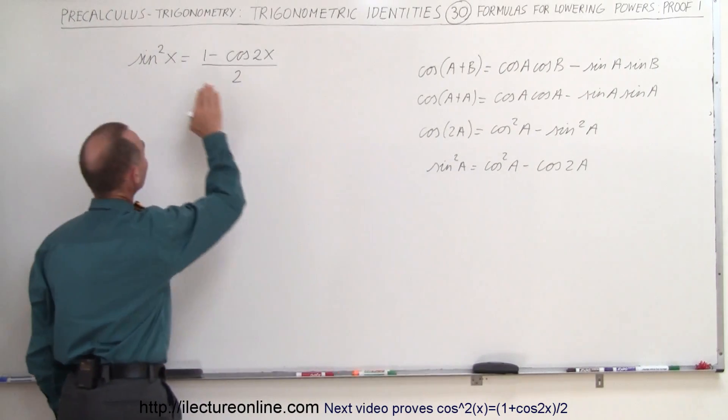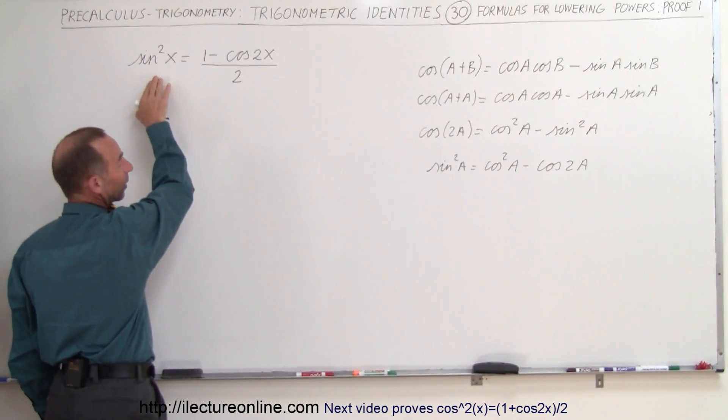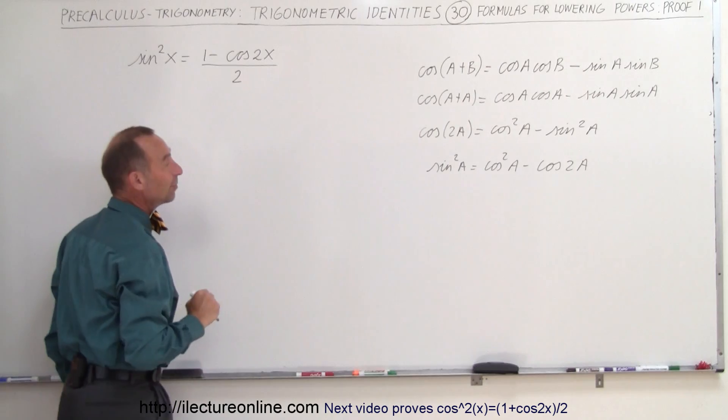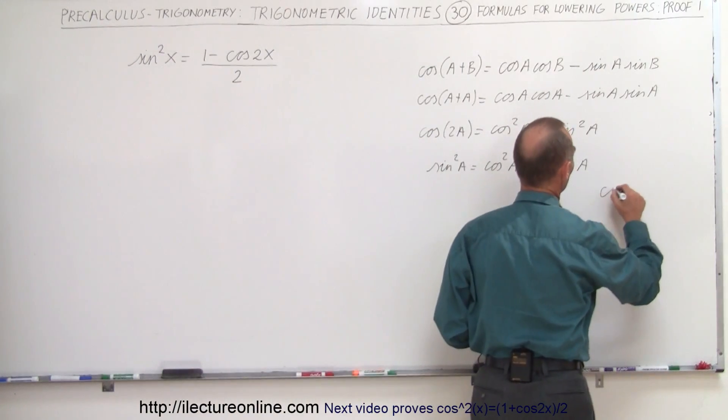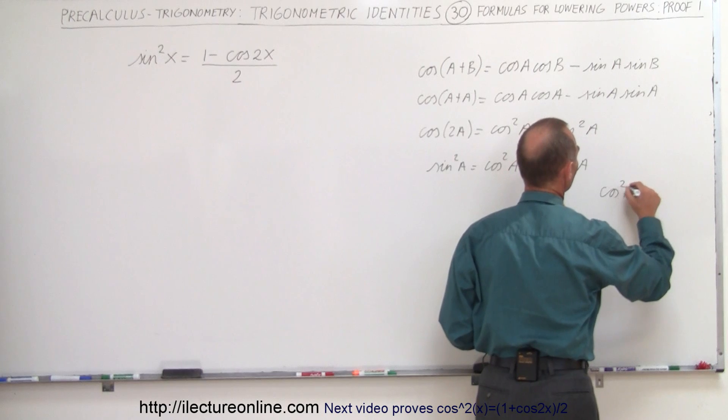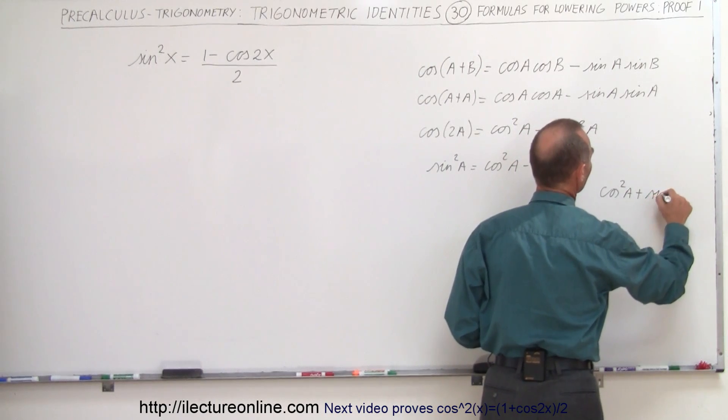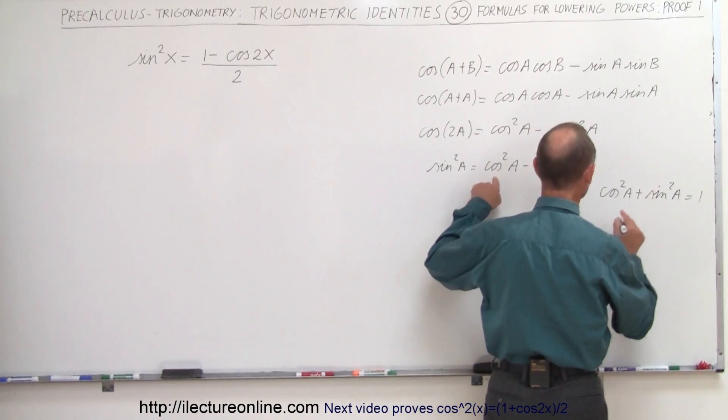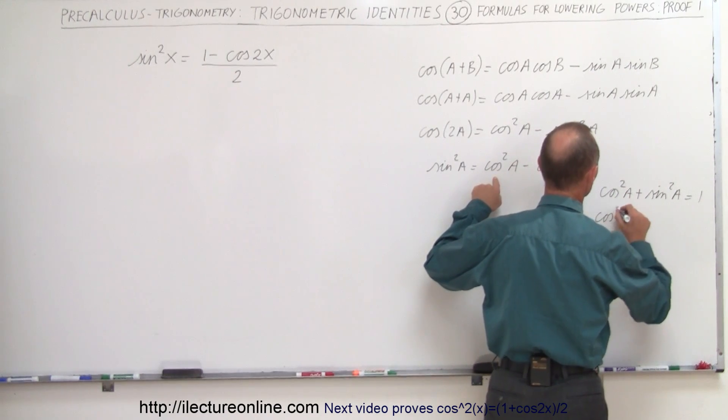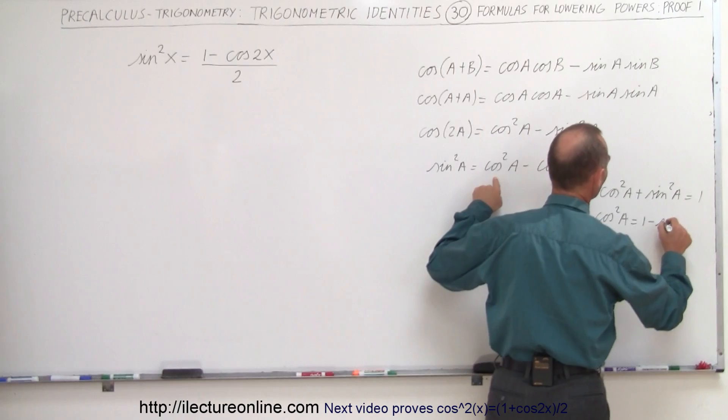Now we're starting to make this look a little bit like here. We already have the sine squared, we have the cosine of 2 times the angle. Now we have to make one more change. Remember that the cosine squared of A plus the sine squared of A is equal to 1, which means that the cosine squared of A can be written as 1 minus the sine squared of A.